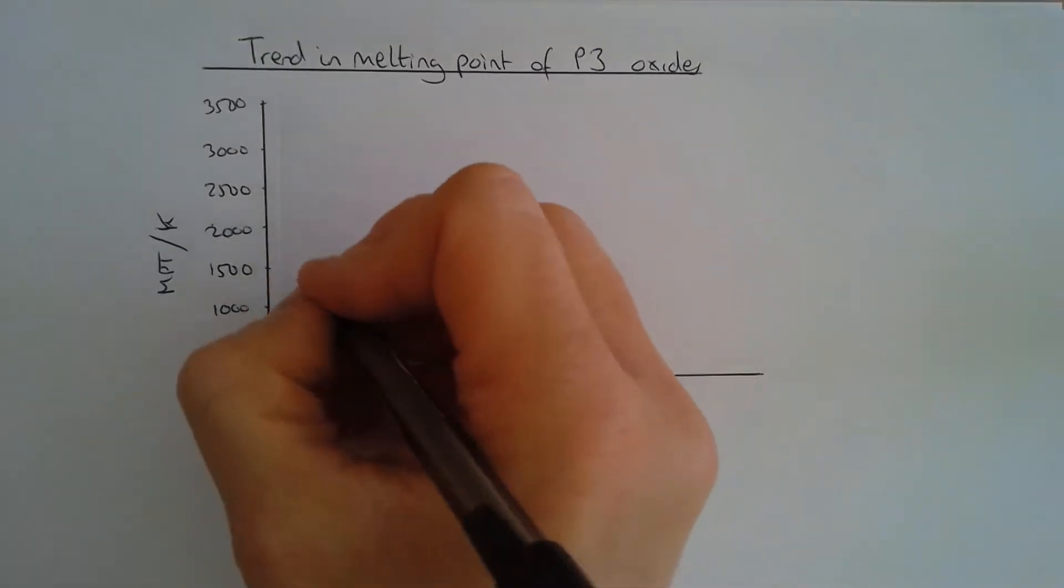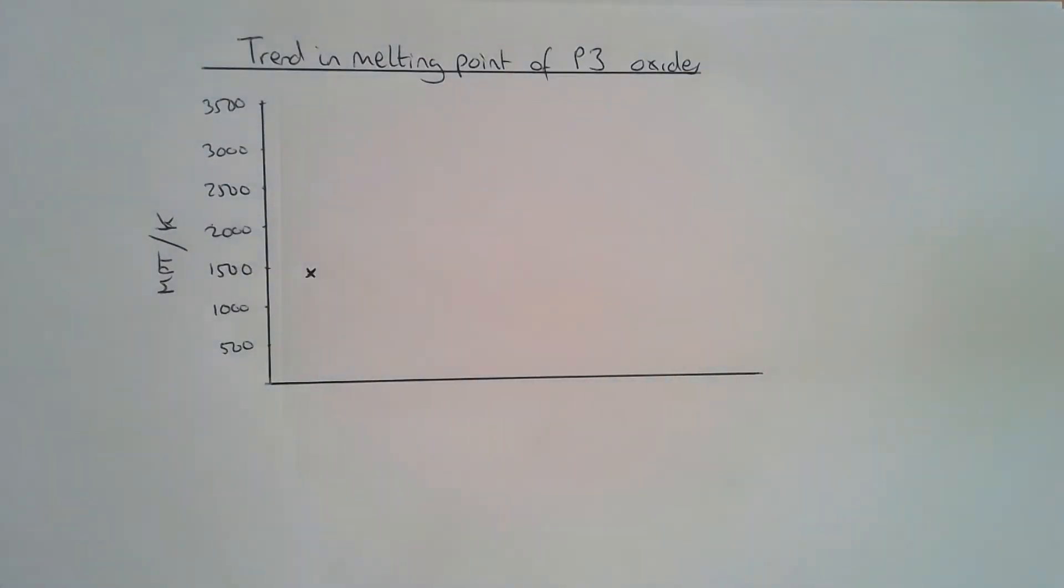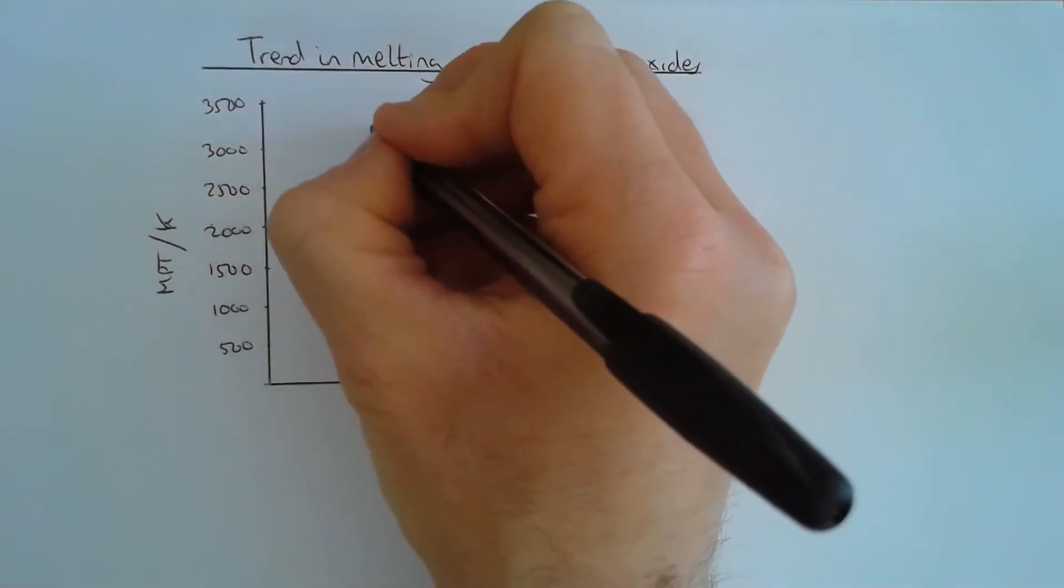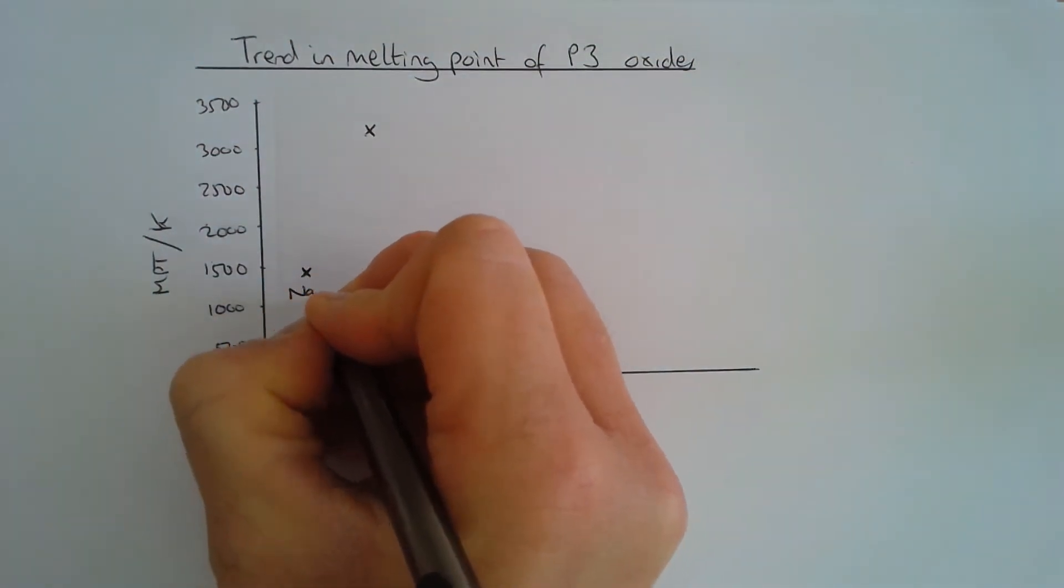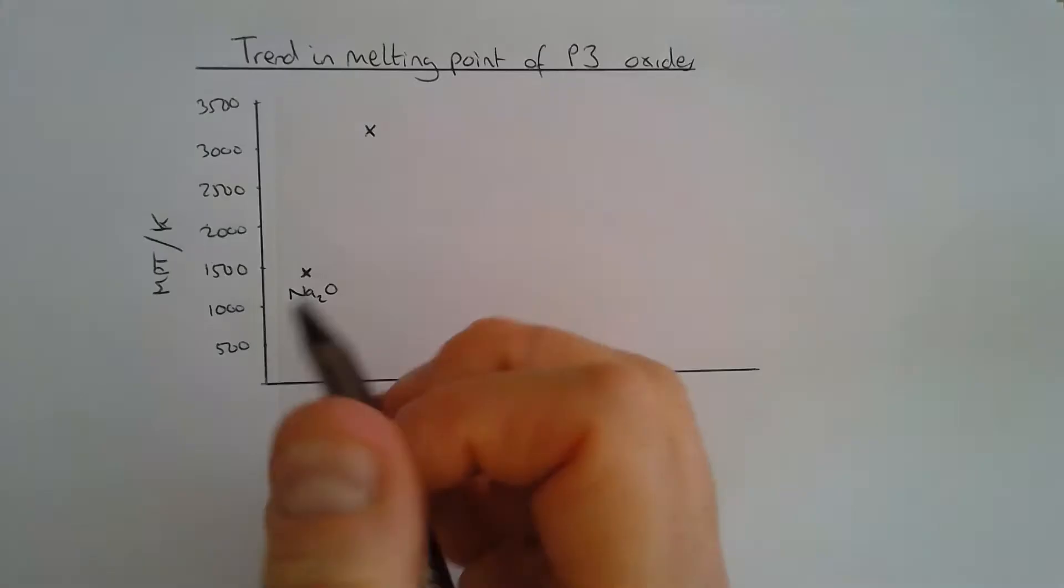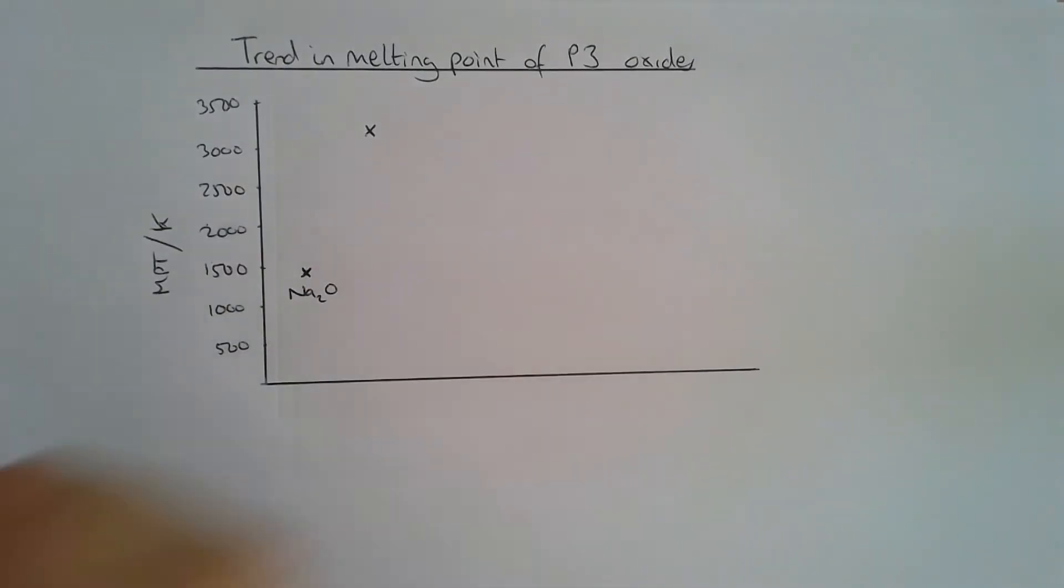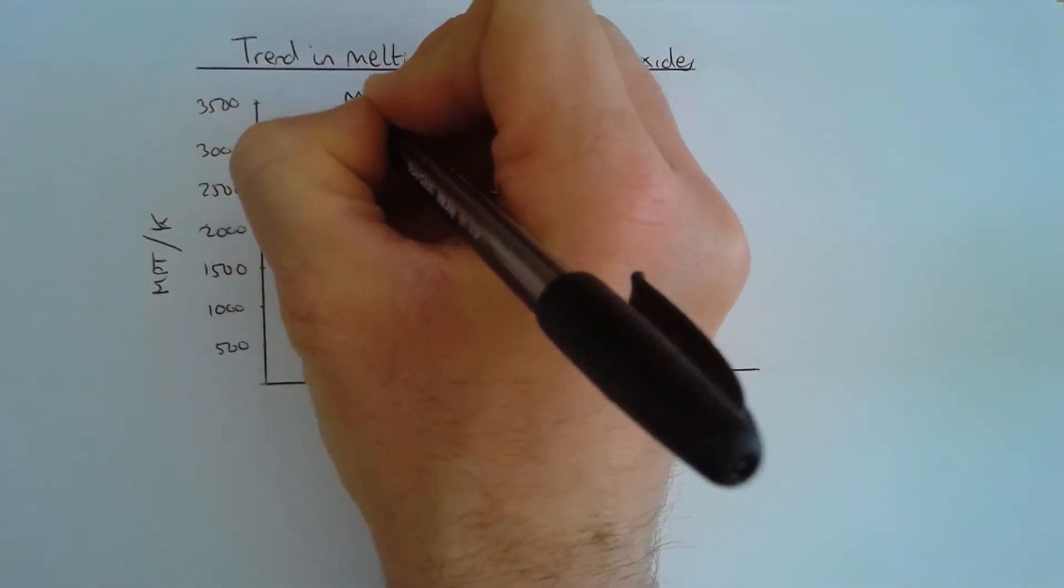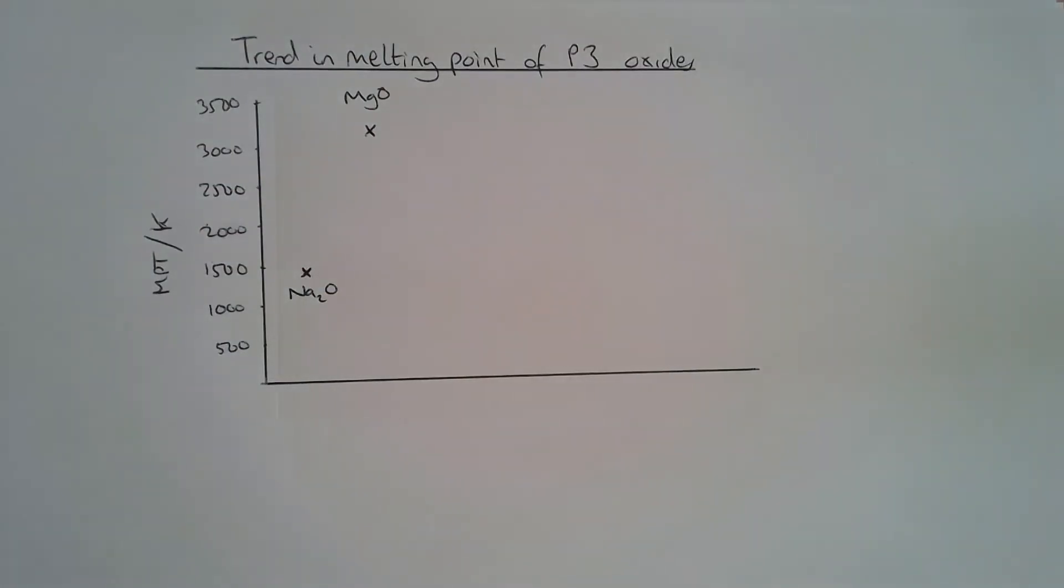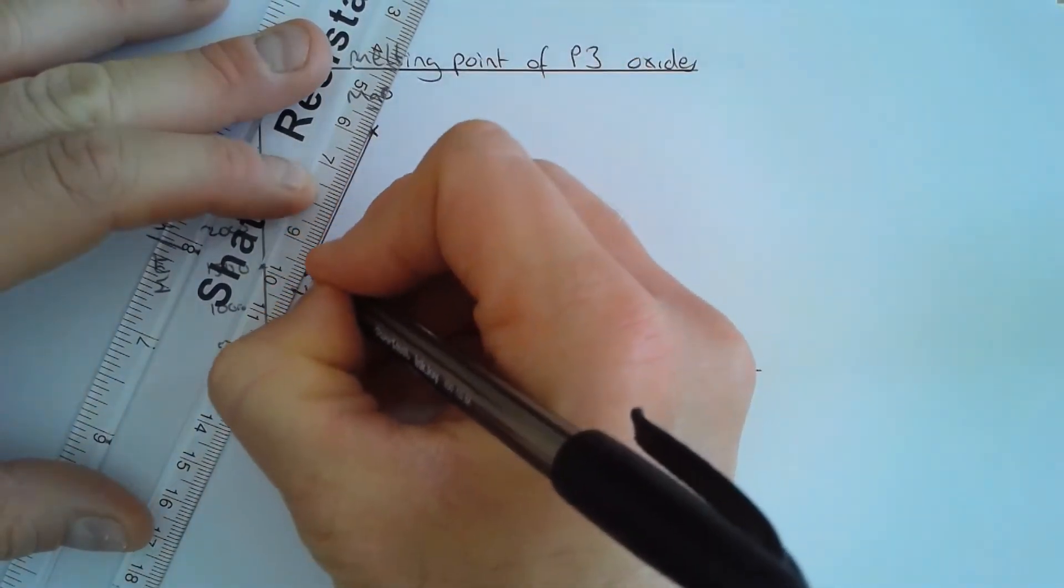So the first one we're going to look at is the melting point of sodium oxide and of magnesium oxide. You can see from the graph here that they have very large, very high melting points. Sodium oxide is about 1400 Kelvin, going up to over 3000 Kelvin for magnesium oxide. These are extremely high melting points and we'll see in a minute why we expect these to be so high.